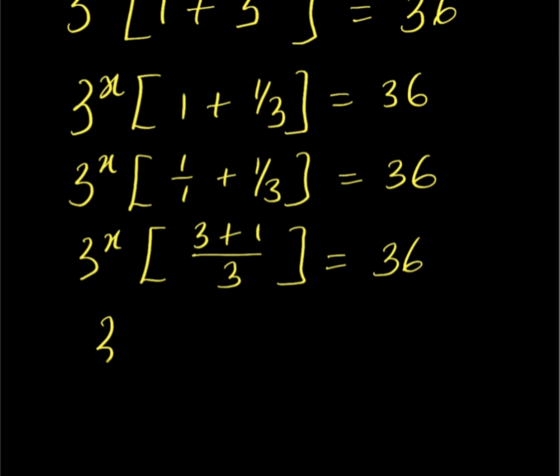From here, we have 3 to the power of x multiplied by 4 over 3, because 3 plus 1 is 4. Everything equals 36.